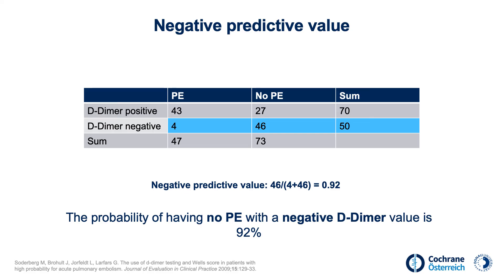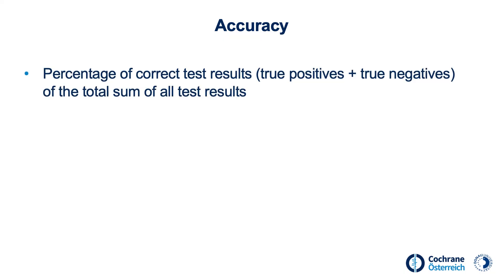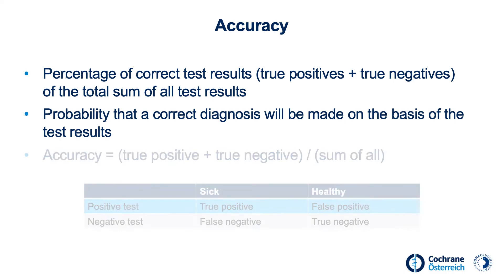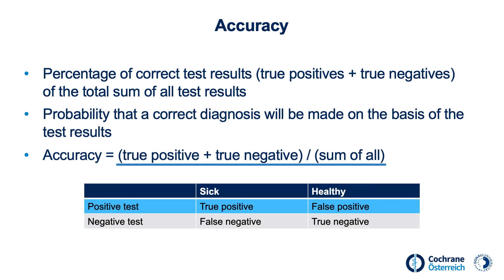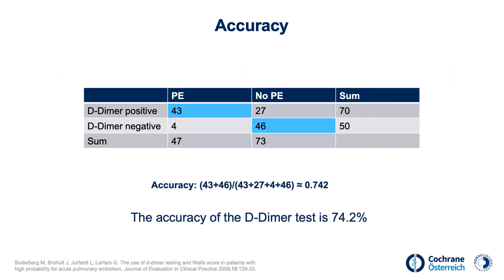Another diagnostic test parameter is accuracy. It is defined as the percentage of correct test results out of all tests, addressing the probability that a correct diagnosis will be made based on the result of the test. It is calculated by the sum of the true positive and true negative values divided by the sum of all values. In our example, the accuracy of the D-dimer test is 74.2%. In other words, 7 out of 10 patients with a suspected pulmonary embolism will receive a correct diagnosis with a D-dimer test.